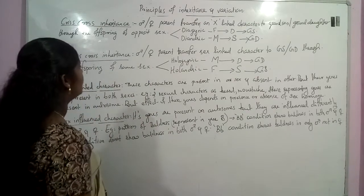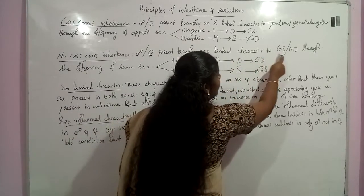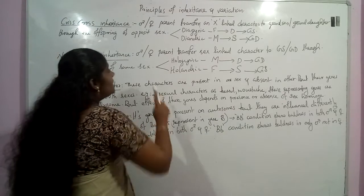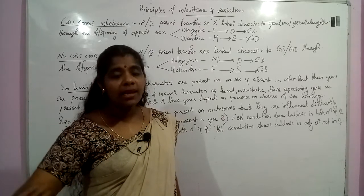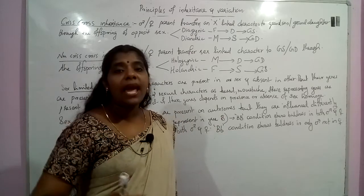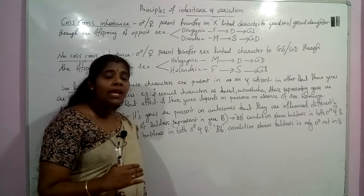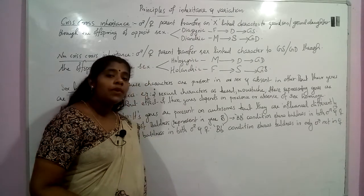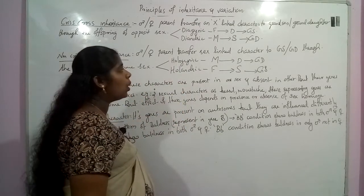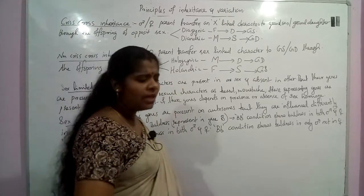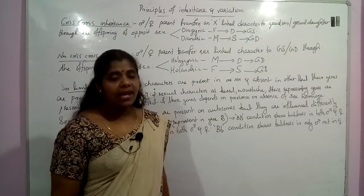Non-Criss-Cross inheritance is when a male or female parent transfers a sex-linked character to grandson or granddaughter through the offspring of the same sex. So from one male parent to son to next grandson, the sex chromosomal characters pass — that is Non-Criss-Cross inheritance. There are two different types: hologynic and holoandric. In hologynic, the complete character expressed by that X-chromosome passes only to females.